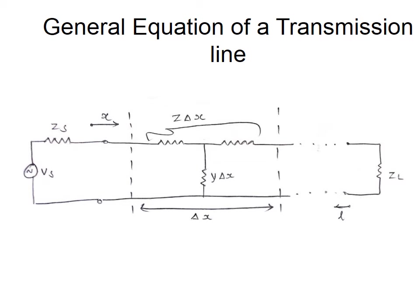Welcome to this lecture on general equations of the transmission line. Here we would like to derive the equation of voltage and current at any point on the transmission line. This transmission line is supplied with a voltage source which supplies voltage Vs with an internal resistance Zs, and on the right side we have a load with impedance ZL.